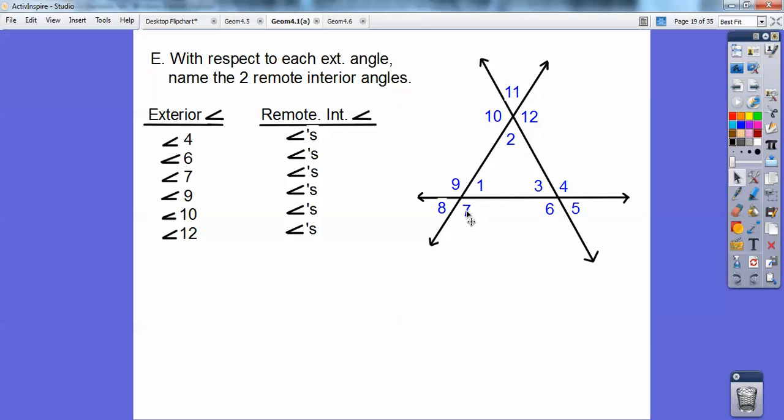8 is not, because it doesn't make a straight line. 9 is, because it makes a straight line. What about 12? Is it an exterior angle? Yes, because it makes a straight line with angle 2. So let's look at angle 4 right here. Angle 4 is an exterior angle, so the remote interior angles are the two other angles, not angle 3. It's the other two inside angles, so angles 1 and 2.